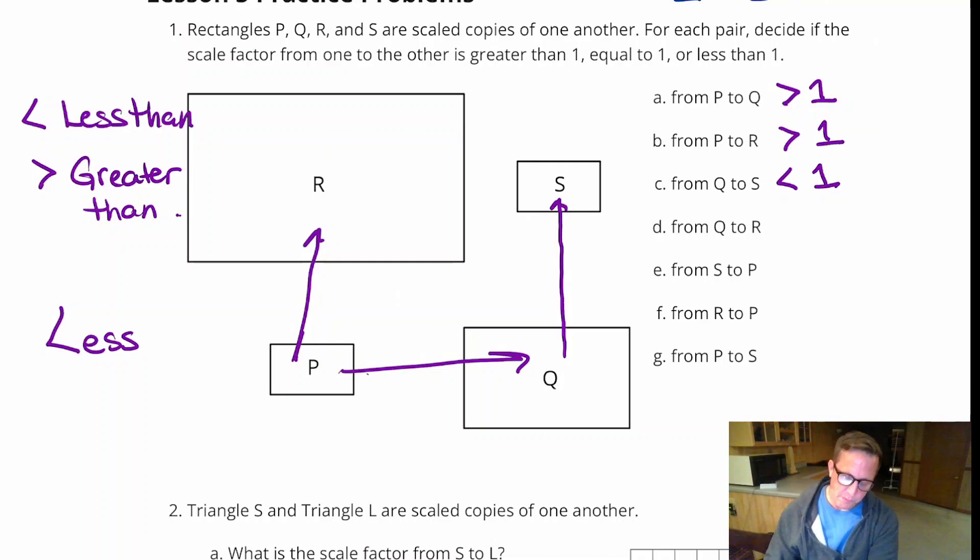From Q to R, from Q to R, we're going from here to here. Now that's going from big to small. So that is less than 1.